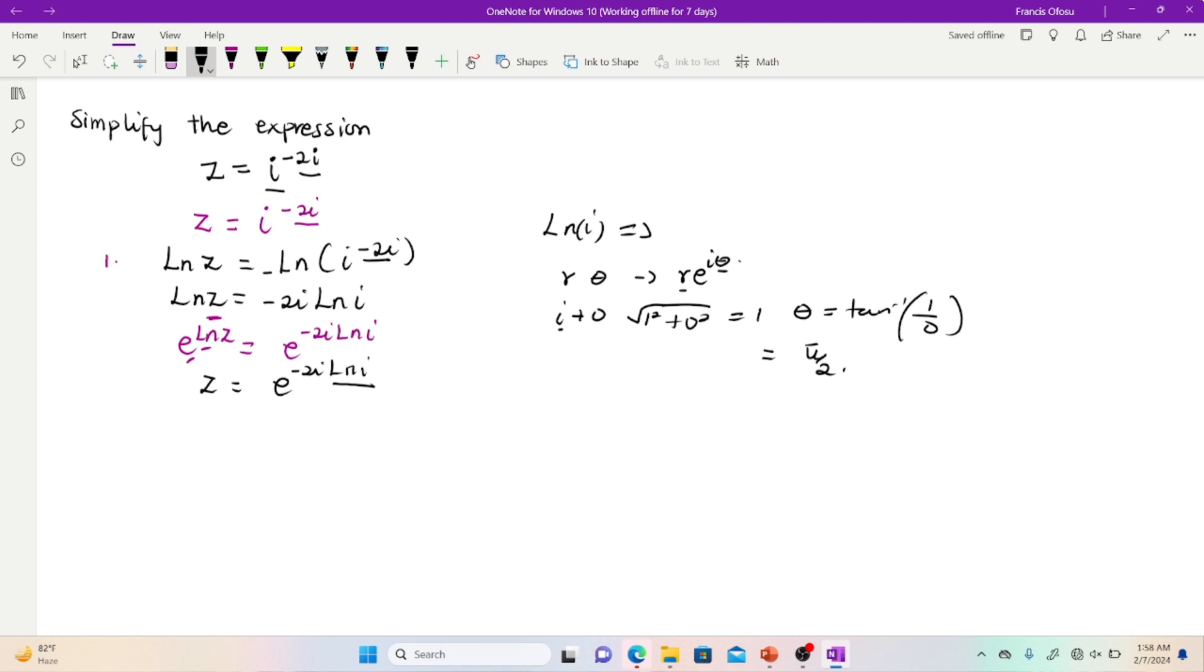So using the graphical notation, if you have i on the Argand diagram, i simply falls on the y-axis, that is imaginary y-axis. So you can see that the angle from the positive x axis to the y-axis is 90 degrees. And that gives us the π on 2.